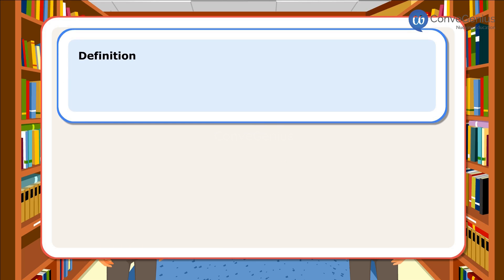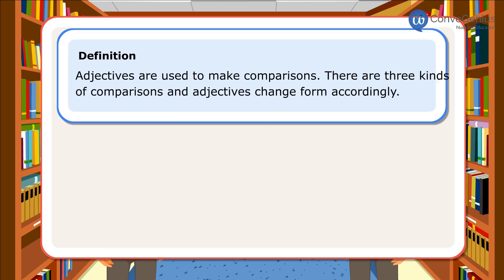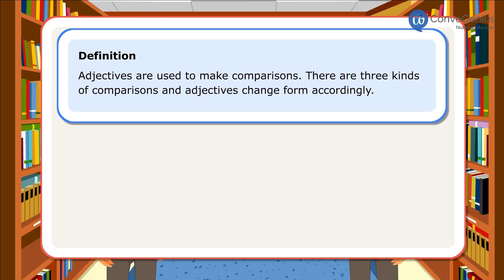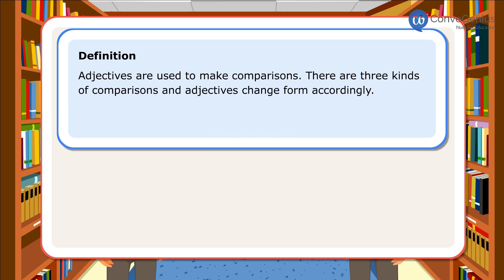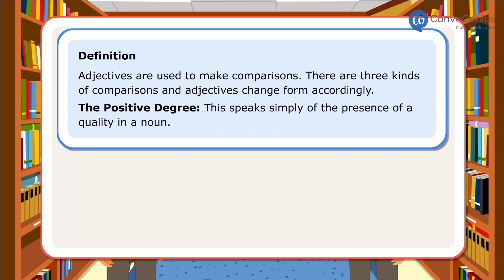Definition: Adjectives are used to make comparisons. There are three kinds of comparisons, and adjectives change form accordingly. The Positive Degree speaks simply of the presence of a quality in a noun.